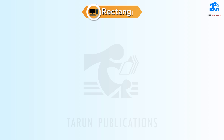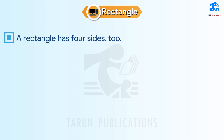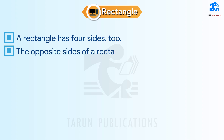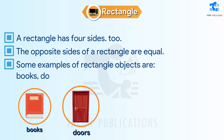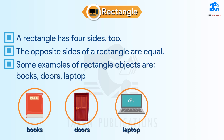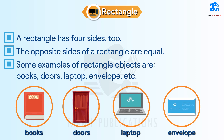Rectangle. A rectangle has four sides. The opposite sides of a rectangle are equal. Some examples of rectangular objects are books, doors, laptop, envelope, etc.